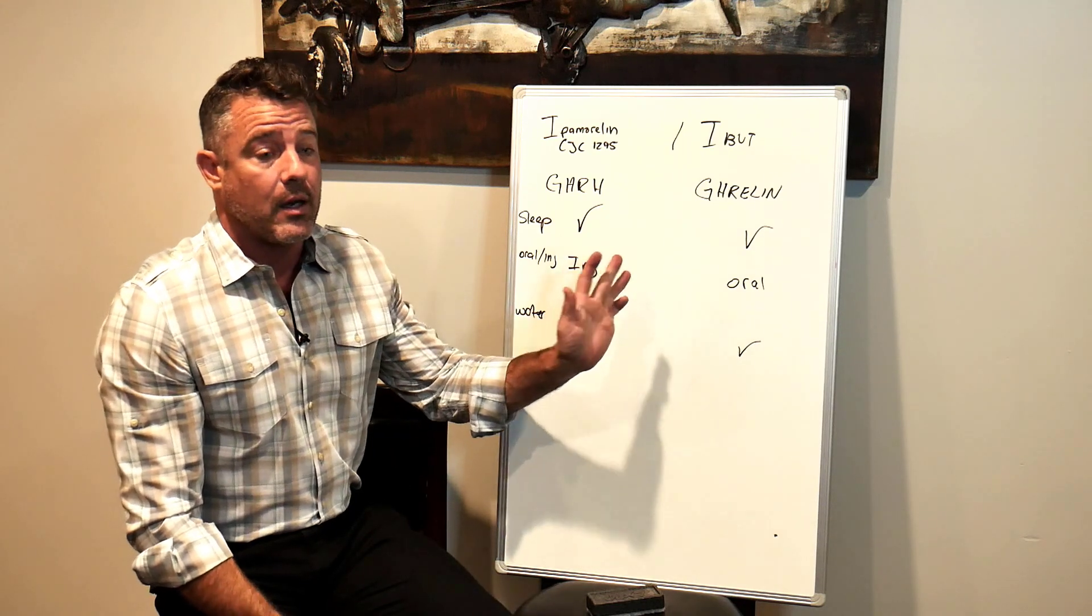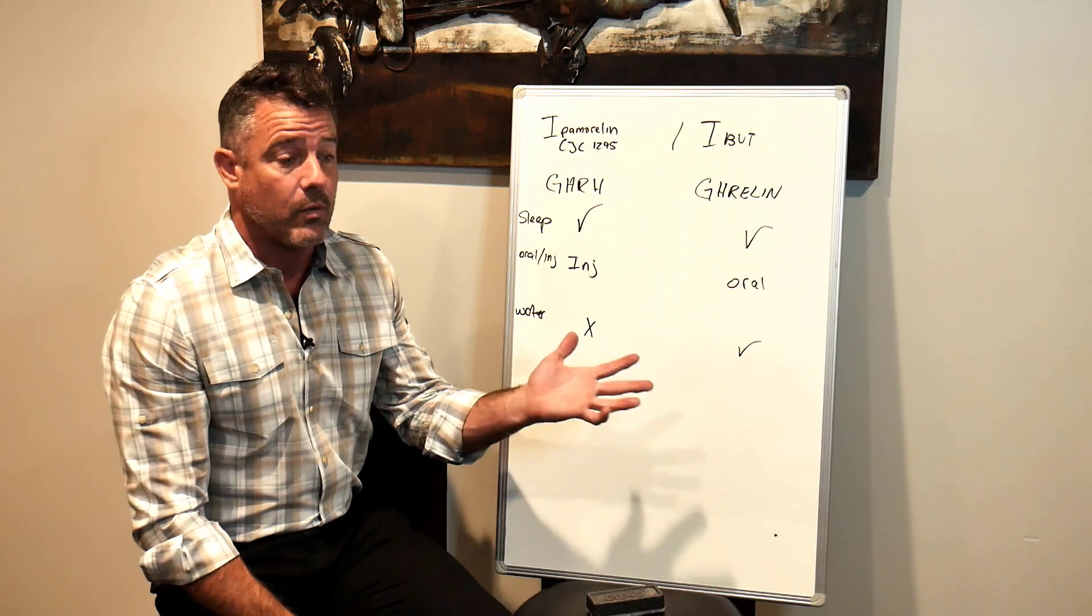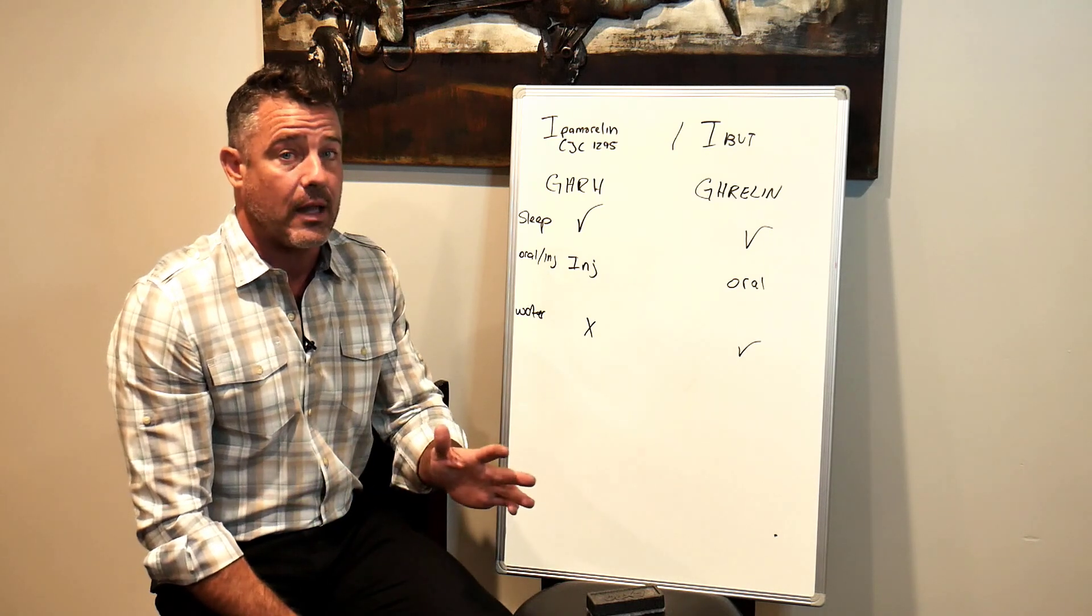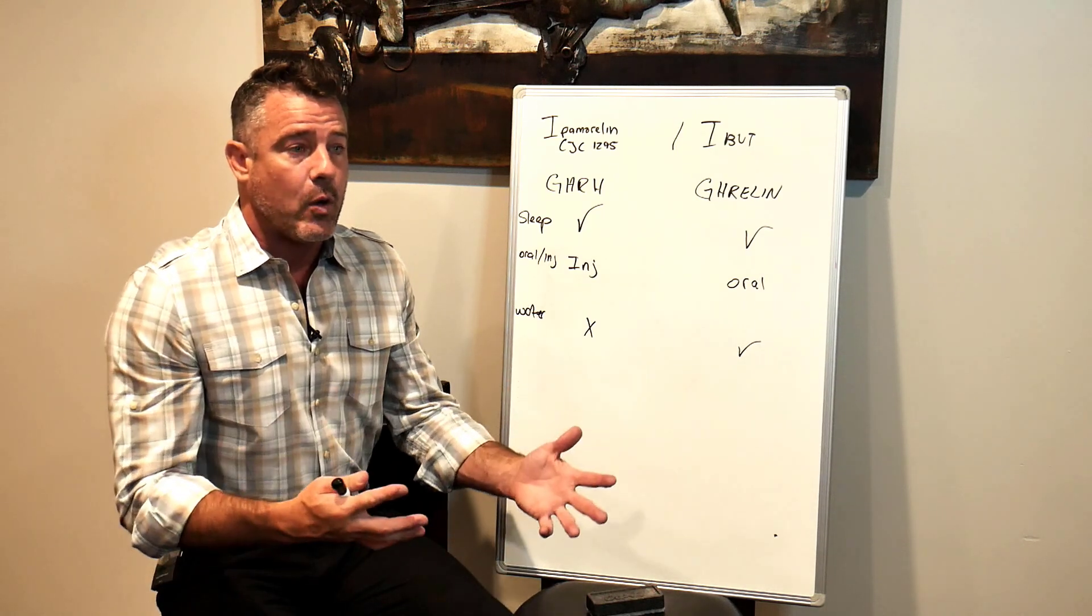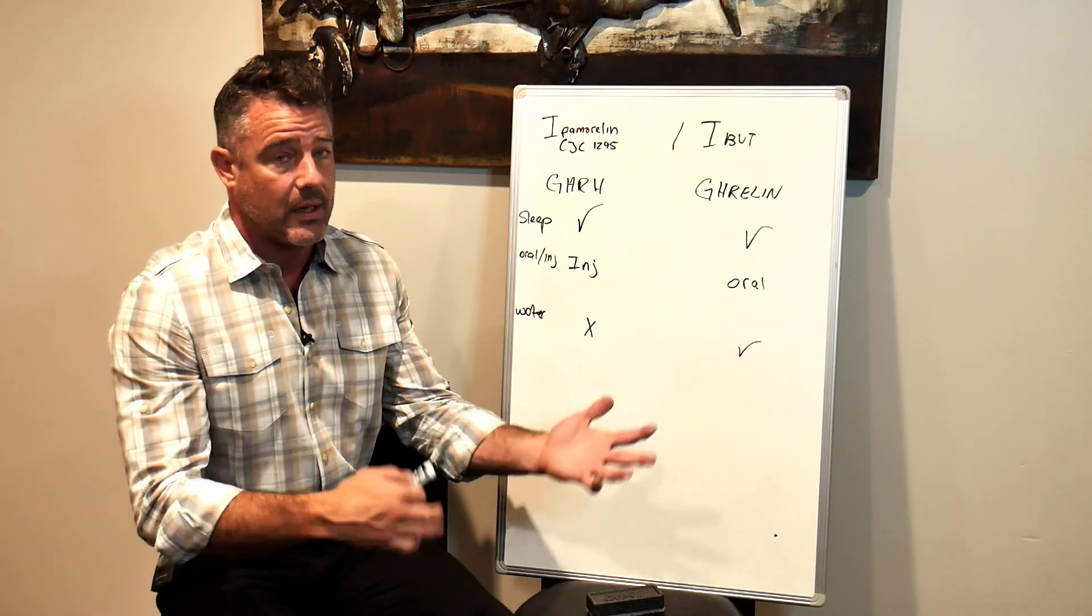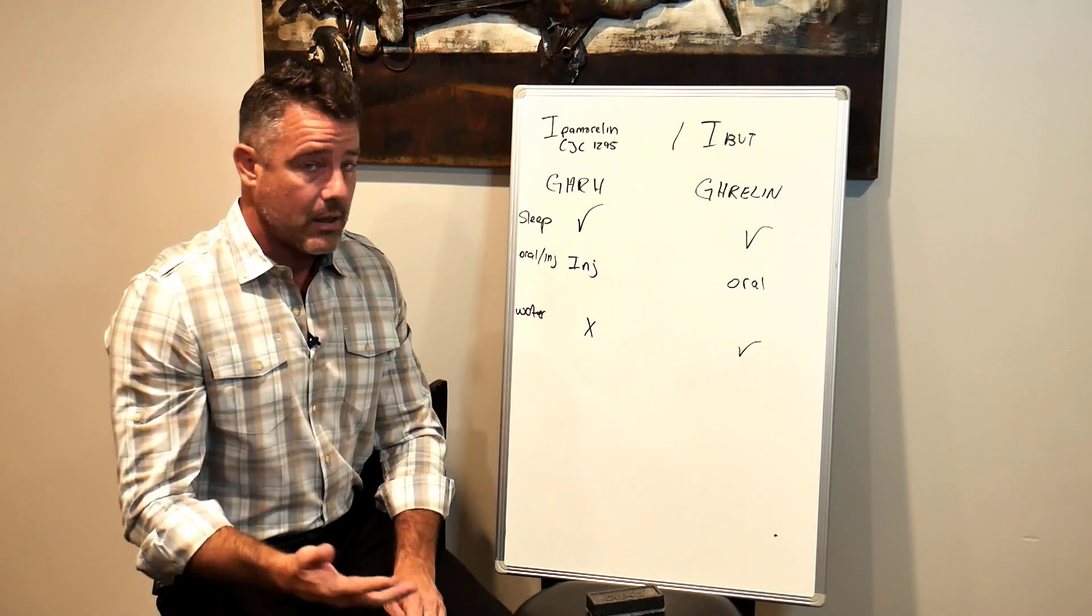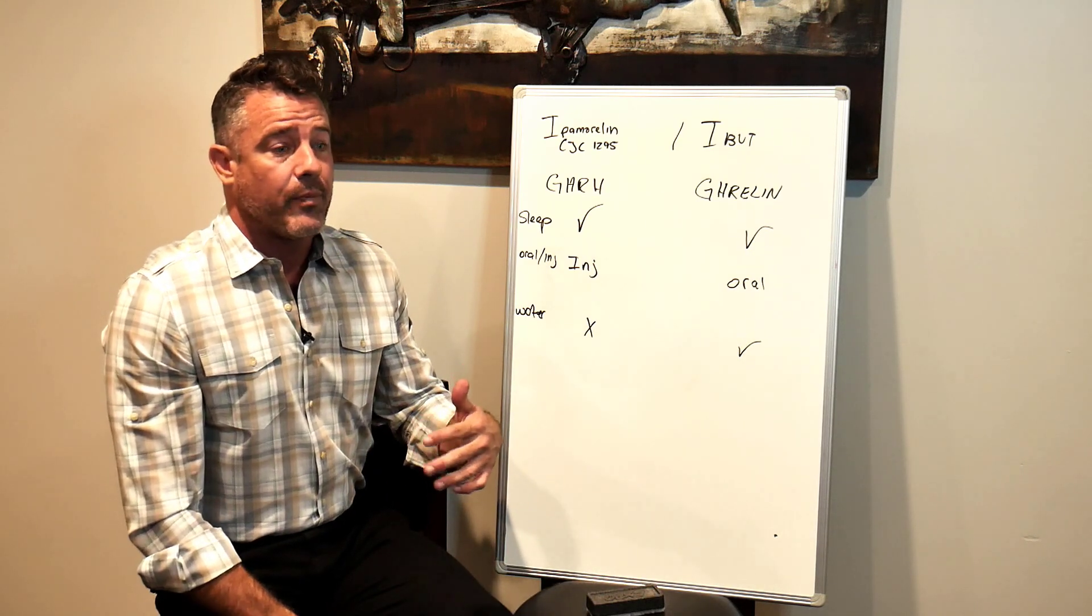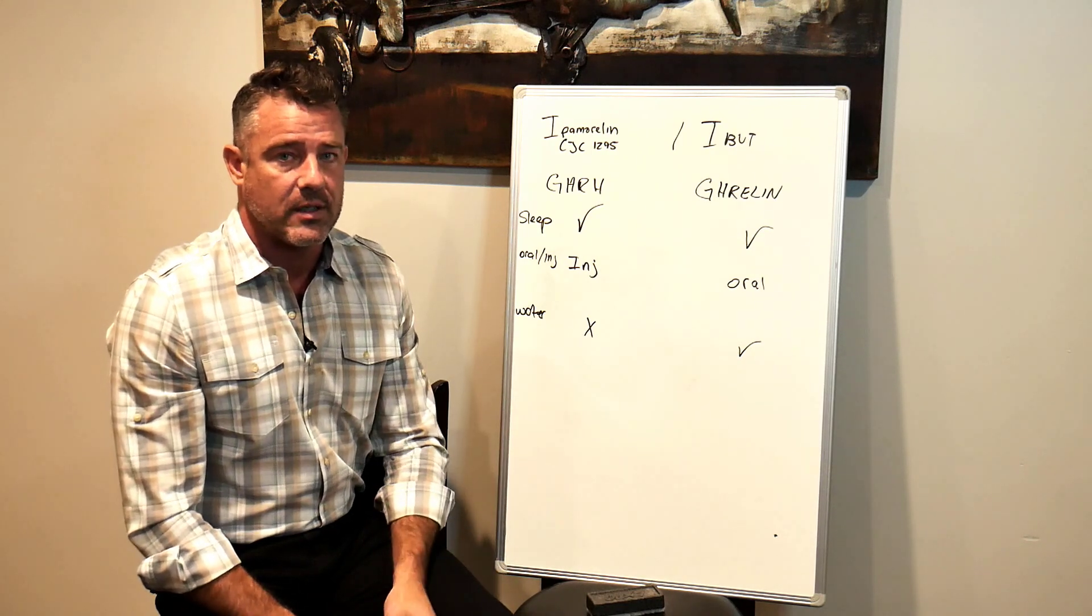So the way these work at our clinic, if you're on our testosterone plan, they're $200 additional a month. When you compare that to what actual growth hormone costs, it is pennies on the dollar. And again, this is 60 to 70 percent as effective with none of the side effects for pennies on the dollar. It's a no-brainer. That's why we don't even write the growth hormone prescriptions anymore unless there's an outstanding circumstance. But if you're not on our testosterone program, they're $300 a month. All of our peptides are $300 a month.